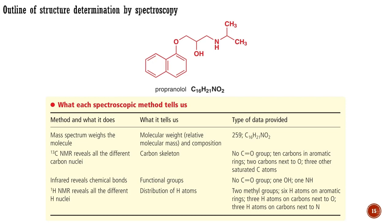This still leaves a variety of possible structures, and these could finally be distinguished by the details revealed by proton NMR. We will deal with proton NMR only briefly in this module as it is more complicated than carbon NMR, but we will return to it later. In the following lectures, we must go through each of these methods and see how they give us information about the propranolol molecule.